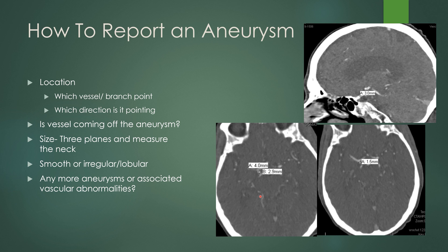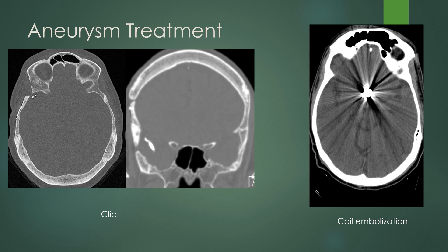Aneurysm treatment comes in two main forms, though stenting is also an option as shown previously. An aneurysm clip looks like a small pair of scissors at the location of the aneurysm. Coil embolization produces a large ball of metallic density with streak artifact. The clip is usually a dead giveaway because a craniotomy or craniectomy defect is associated with it, whereas coil embolization may not show a craniotomy defect.